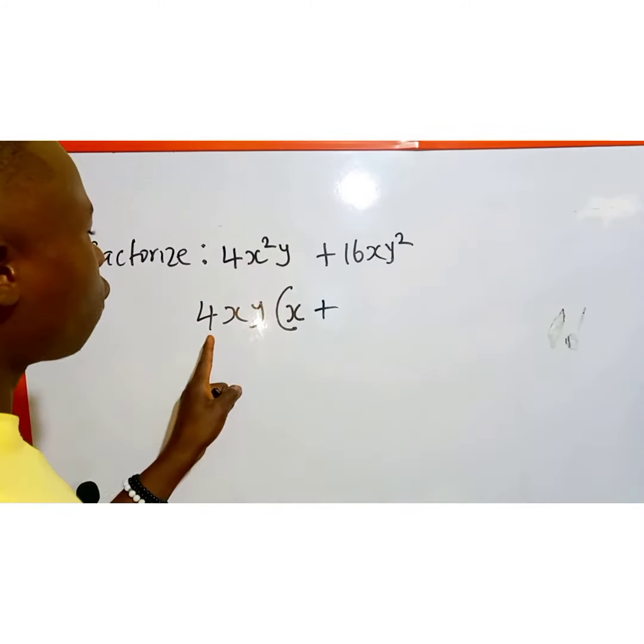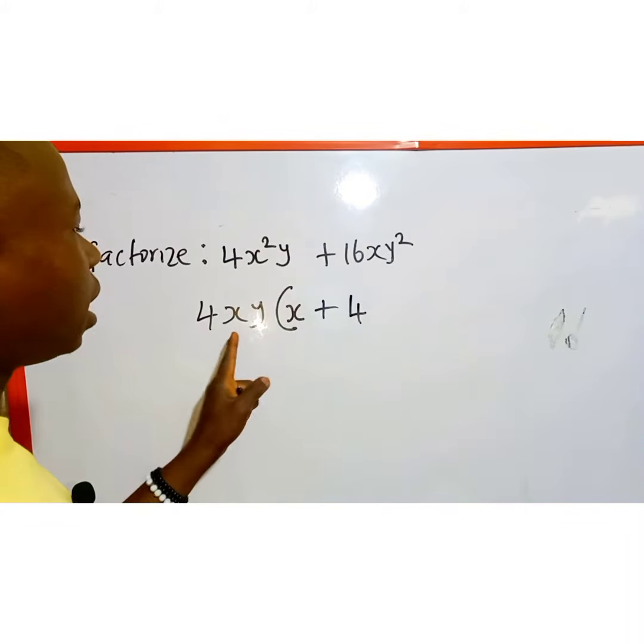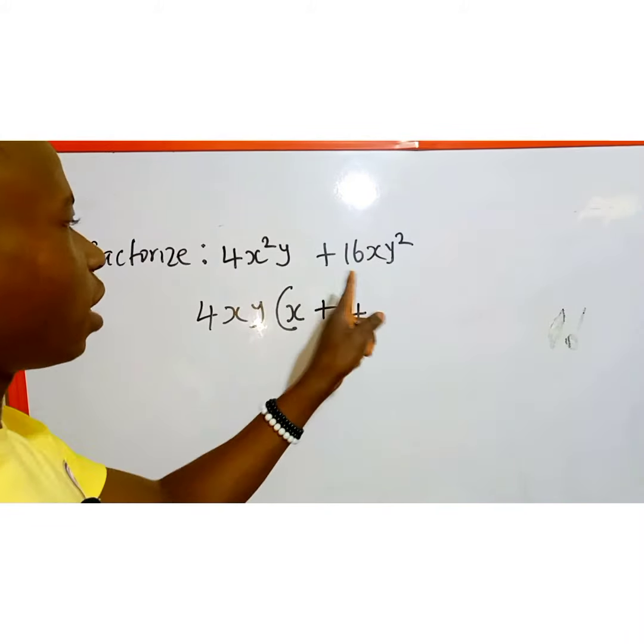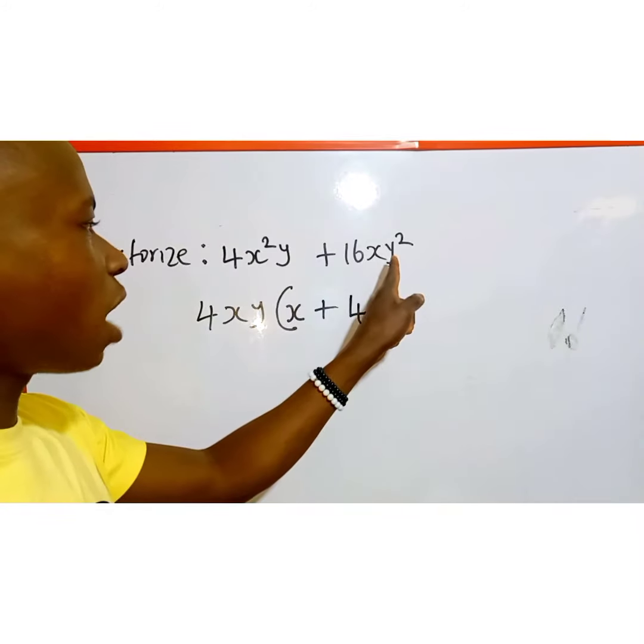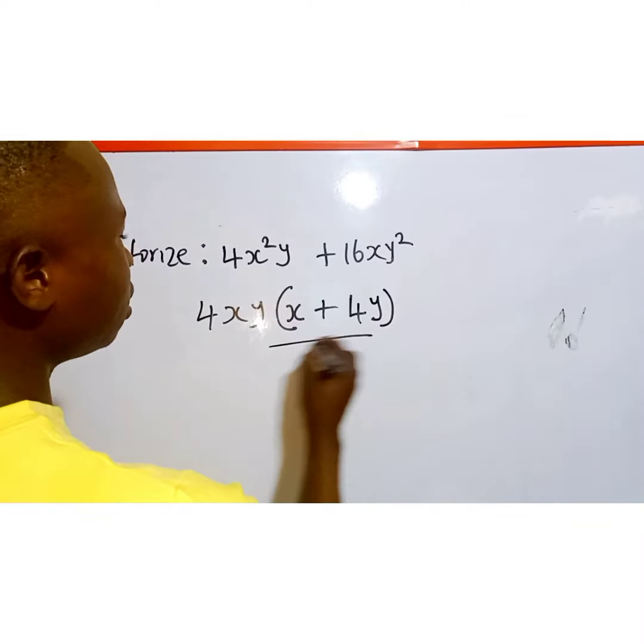Then plus, 4 can go into 16 four times, so we write our 4. Then x is one here, is already out. Then y squared, and one y is out already, so it will remain only one y. So this is the factorization of this expression.